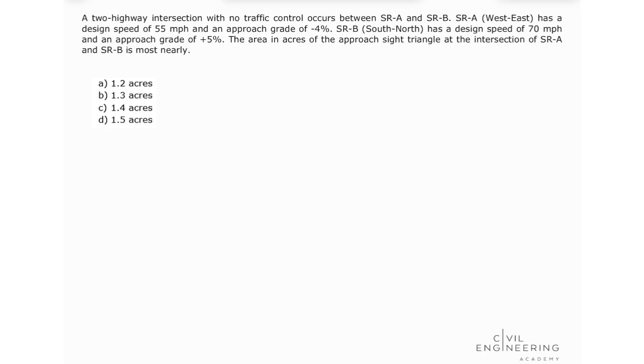The problem states like this. A two-highway intersection with no traffic control occurs between State Route A and State Route B. State Route A, west to east, has a design speed of 55 miles per hour and an approach grade of minus 4%. State Route B, south to north, has a design speed of 70 miles per hour and an approach grade of plus 5%. The area in acres of the approach site triangle at the intersection of State Route A and State Route B is most nearly.